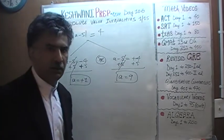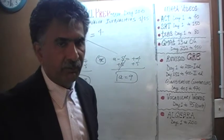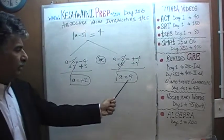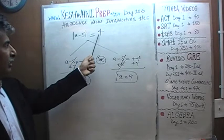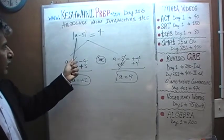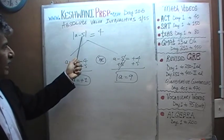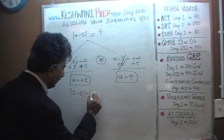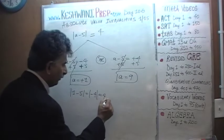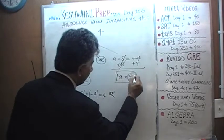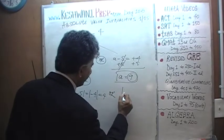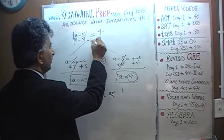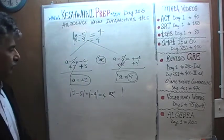We can very quickly verify this — it only takes two seconds. If A happens to be 1: the absolute value of 1 minus 5 is the absolute value of negative 4, which is 4. Or if A happens to be 9: the absolute value of 9 minus 5, which is 4. That checks out.